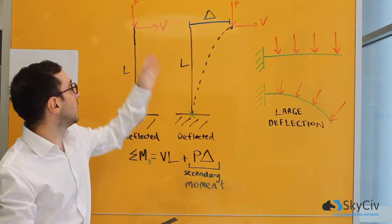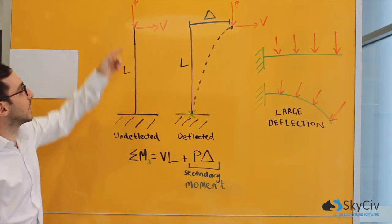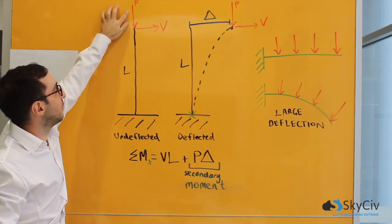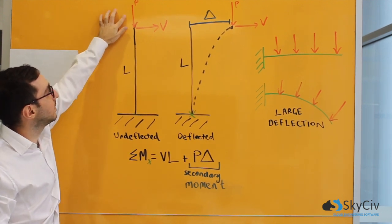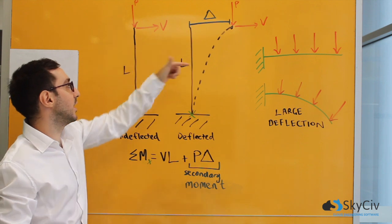In the diagram of this column here, we can see the gravity load is that vertical downwards load of P and our wind load is the lateral load of V.